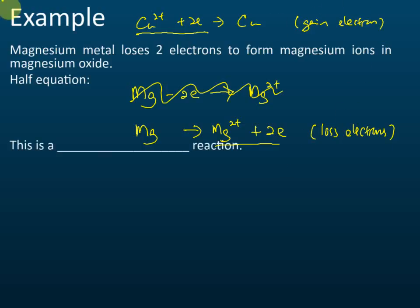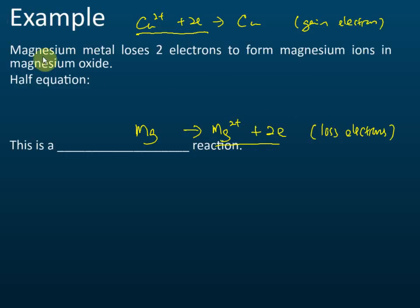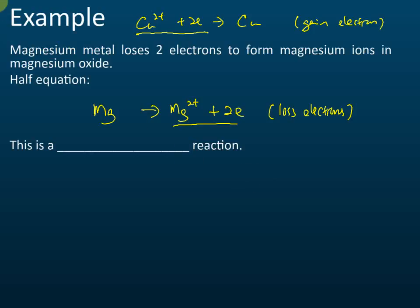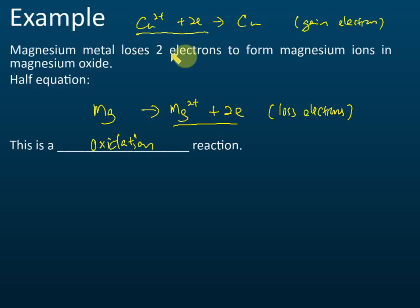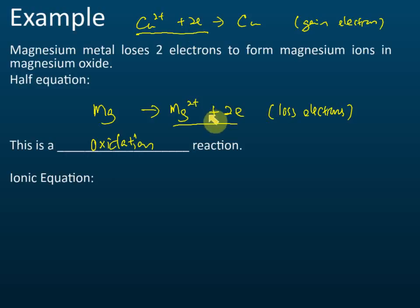If electrons are on the left-hand side, that is gaining electrons. If electrons are on the right-hand side, that is losing electrons. Losing electrons is oxidation, and gaining electrons is reduction. So: copper ions undergo reduction, and magnesium metal undergoes oxidation. These are the two half equations we have learned.